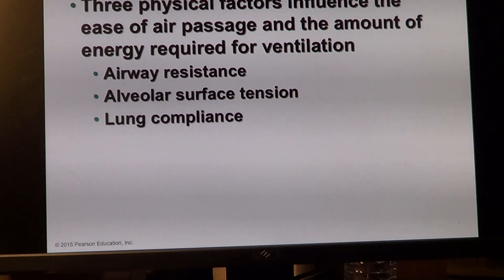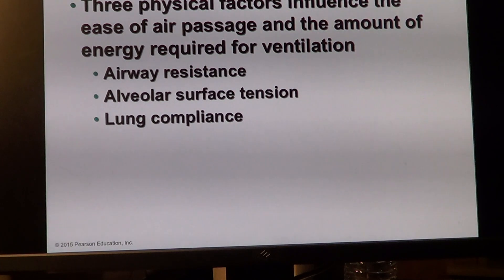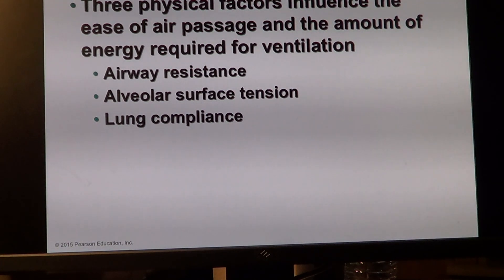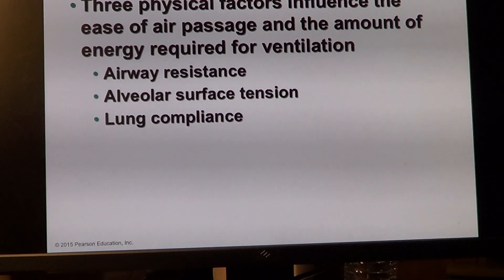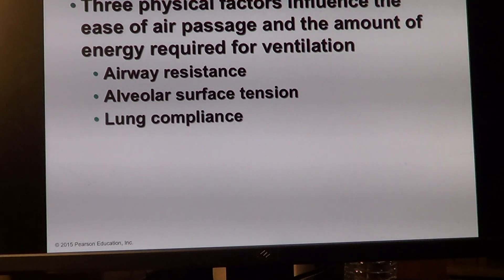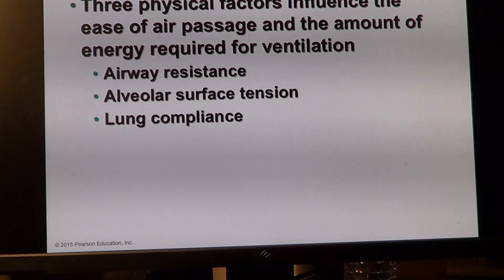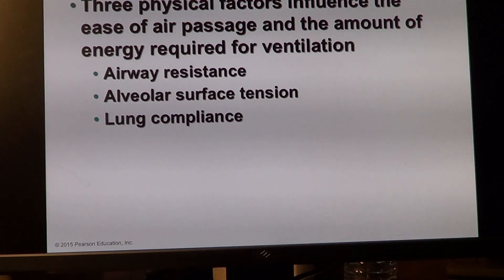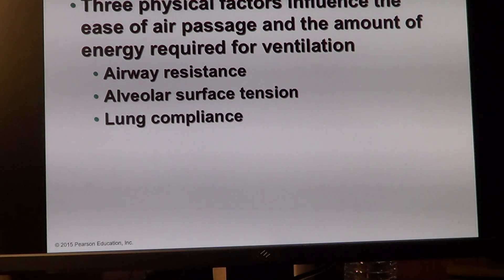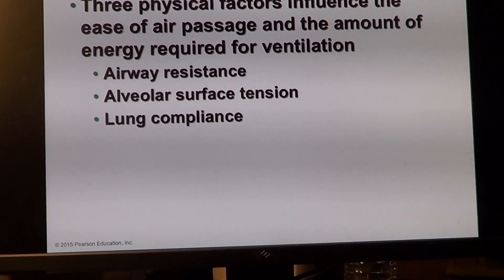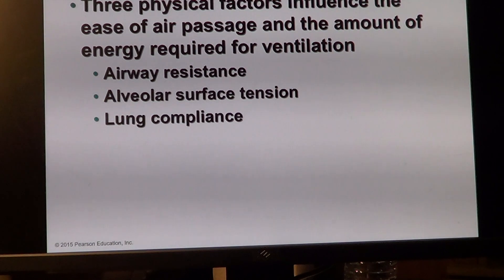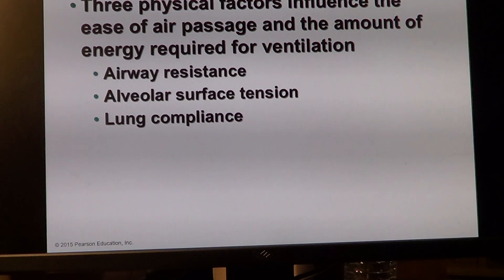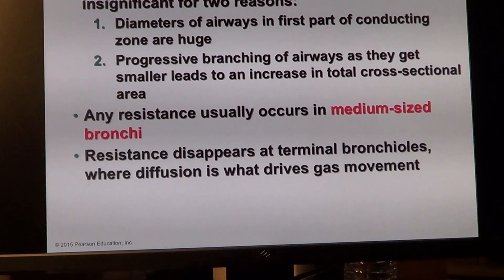Then alveolar surface tension, which we just discussed in the context of collapse. Air supply may be fine, but there is no normal respiratory membrane for full normal gas exchange. And there is lung compliance — the ability of the lung to expand accommodating the volume of air going in and out. This is the third factor we will discuss further.